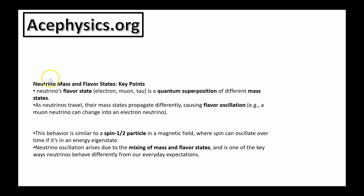In summary, the neutrino's flavor state — for example, an electron neutrino, a muon neutrino, or a tau neutrino — is a quantum superposition of different mass states. As neutrinos travel, their mass states propagate differently, causing flavor oscillations where the neutrino changes from one flavor to another. This behavior is similar to a spin one-half particle in a magnetic field. Neutrino oscillations arise due to the mixing of mass and flavor states.